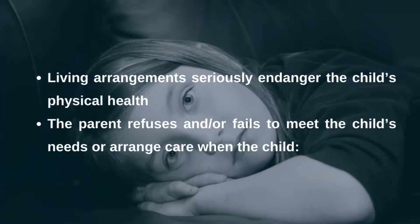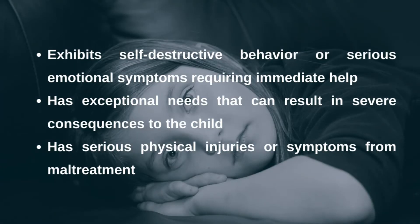Three: living arrangements seriously endanger the child's physical health. Four: the parent refuses or fails to meet the child's needs or arrange care when the child exhibits self-destructive behavior or serious emotional symptoms requiring immediate help, when the child has exceptional needs that can result in severe consequences, or when the child has serious physical injuries or symptoms from abuse. The result of the investigation will inform whether the family requires additional assessment and intervention. A low-risk family may be referred for differential response, while the most severe cases may require placement in out-of-home care, preferably with relatives, to ensure the child's immediate safety while the family is assessed and a safety and service plan is developed.